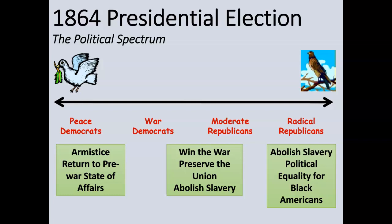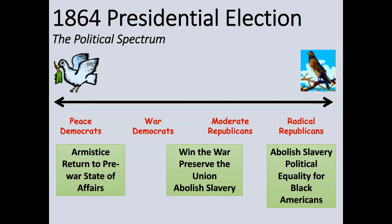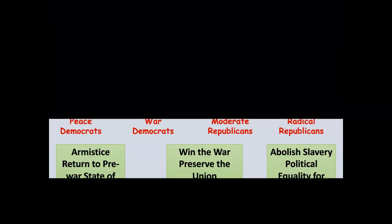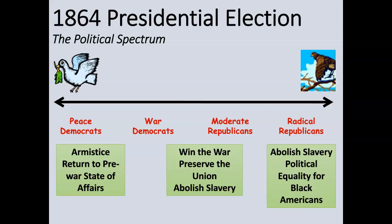Radical Republicans were the group in Congress who pushed not only for abolishing slavery as a first step, but also for political equality for Black Americans. The additional piece of Reconstruction for Radical Republicans would be the 15th Amendment, the right to vote, and mandating citizenship. So the difference between these groups is very significant, and Reconstruction happens in the context of these different factions.